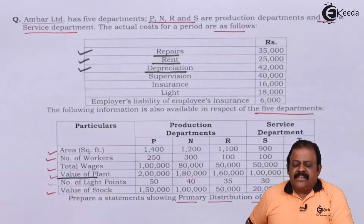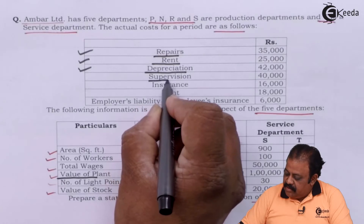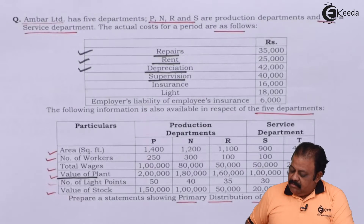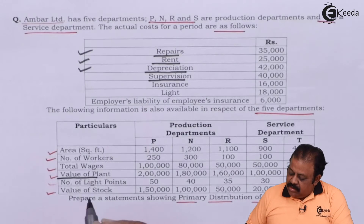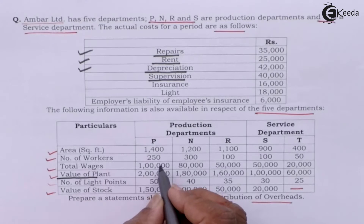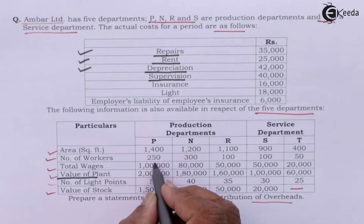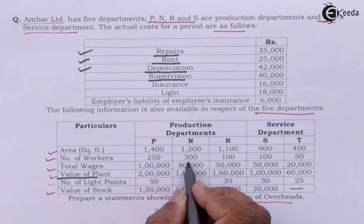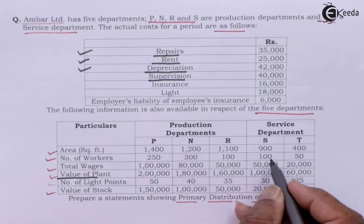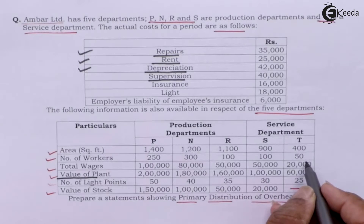The next expense is supervision. This will be divided based on number of workers, that is in the ratio of 250 : 300 : 100 : 100 : 50.